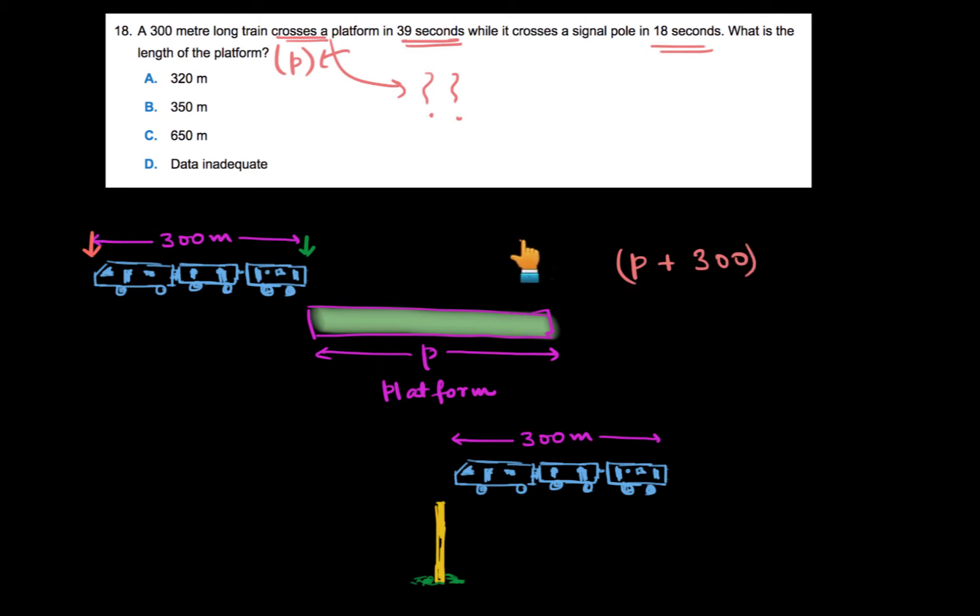So this is my distance covered, which means crossing the platform in 39 seconds. Let's say that the speed of this train is s meters per second. So it takes 39 seconds to cross the platform. It means distance equals speed into time. Let's use this. So this distance P plus 300 is equal to speed of the train, we assumed it to be s, times time taken is 39 seconds. So this is our first equation.